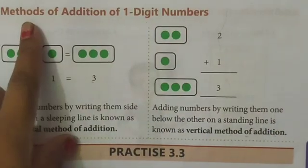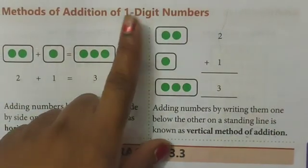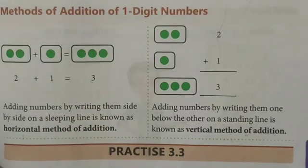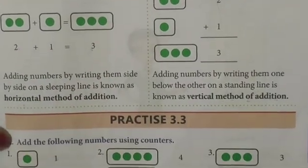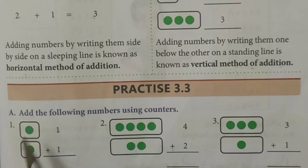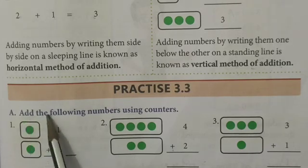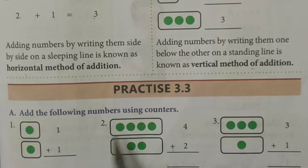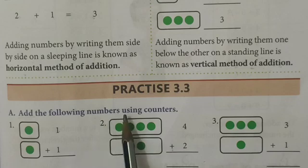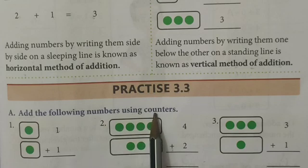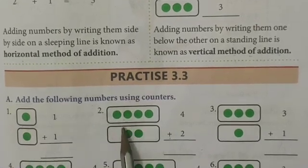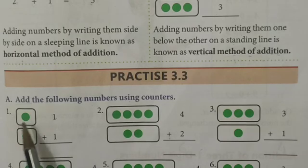But here in Practice 3.3 we are going to see the methods for one digit numbers. See here: 'Add the following numbers using the counters.' That means we need to add the given numbers using the counters shown. Here you have been given dots for counting.